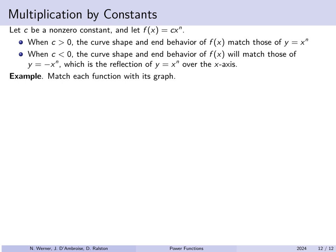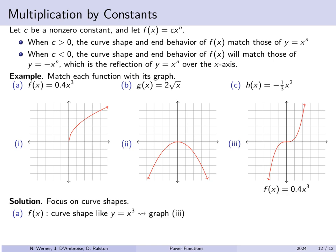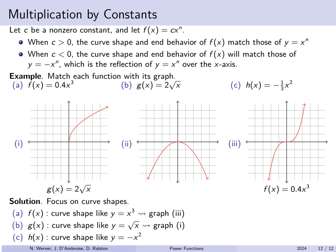Let's match three functions to their graphs using shape reasoning. For 0.4x³: positive constant times x³, so it has the same shape as x³ — that's the third graph on the right. For 2√x: positive constant times √x, so it looks like √x — that's the first graph on the left. For -⅓x²: negative constant times x², so it's a downward-opening parabola — that's the middle graph.